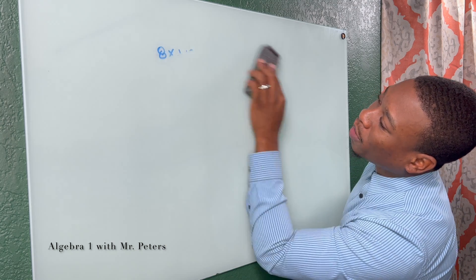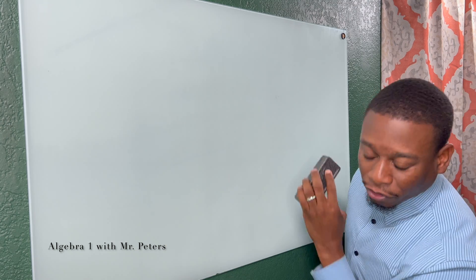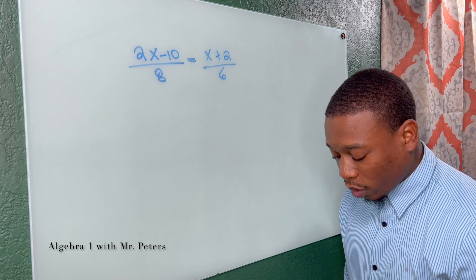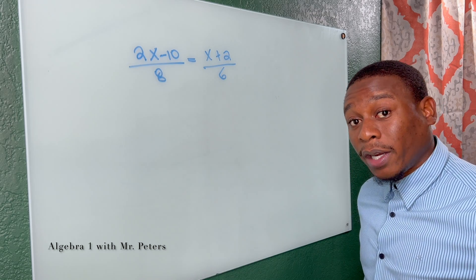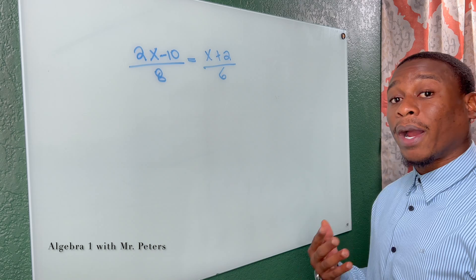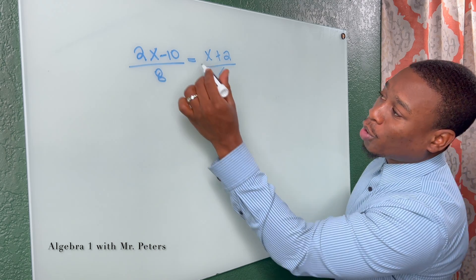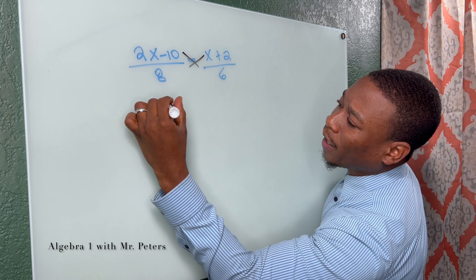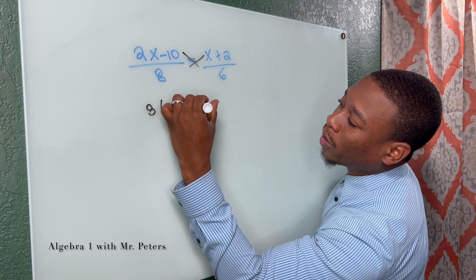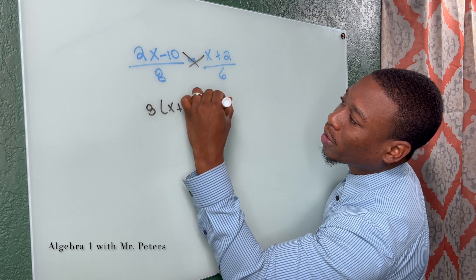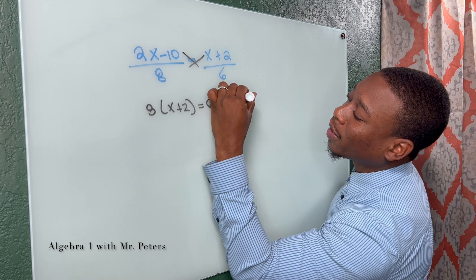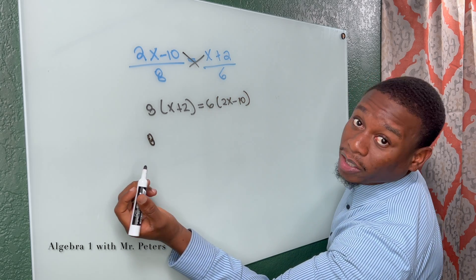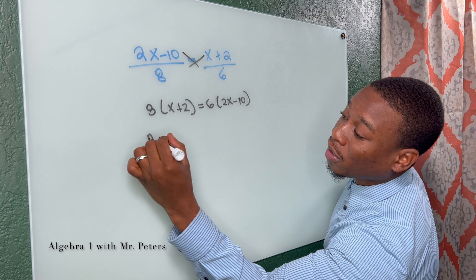So let's practice this cross-multiplication method a little more with a different problem. In a problem like this, we can use that same method of setting up a proportion by cross multiplying. We have 8 times x plus 2 is equal to 6 times 2x minus 10. This turns into a linear equation and we're going to solve for x.